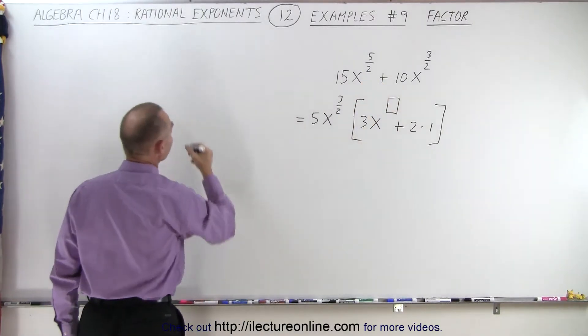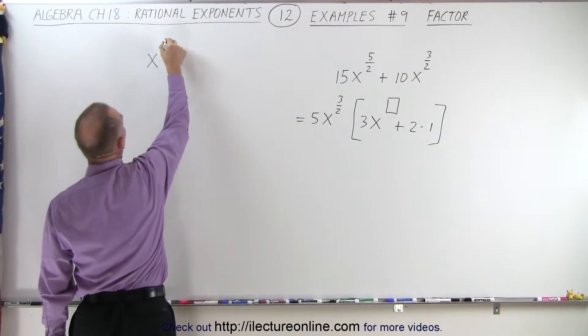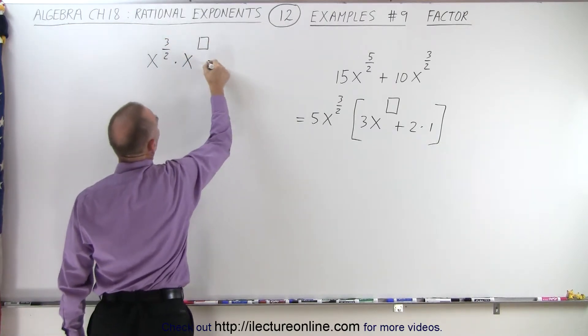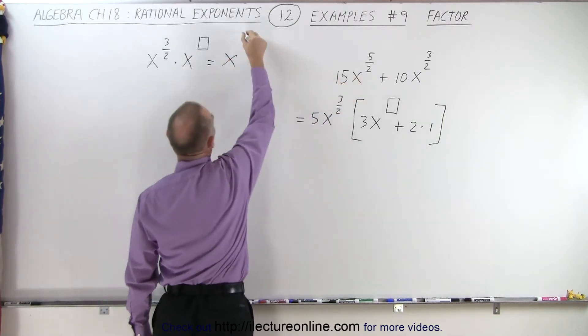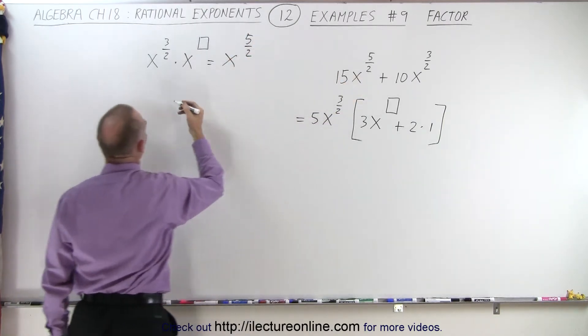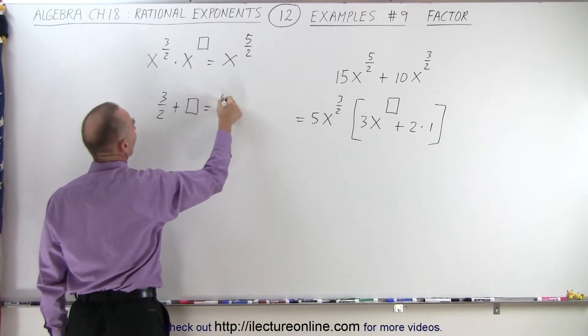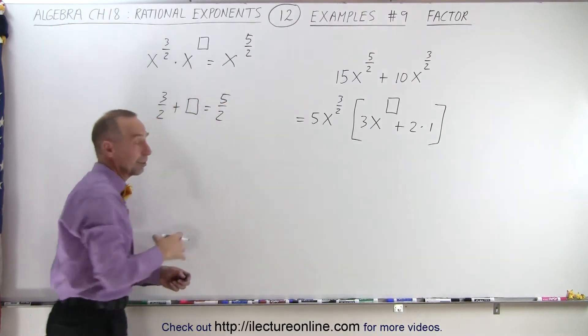So what does that become? Well, x to the three halves times x to the five halves power. So in other words, 3 over 2 plus some unknown exponent gives us 5 over 2, because when we multiply, we need to add exponents.